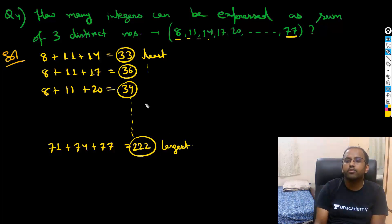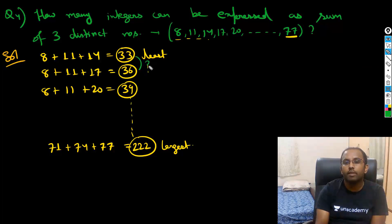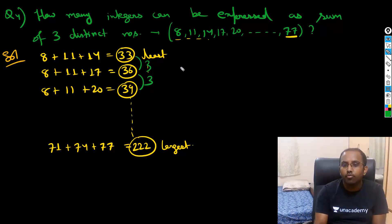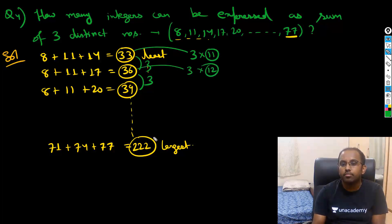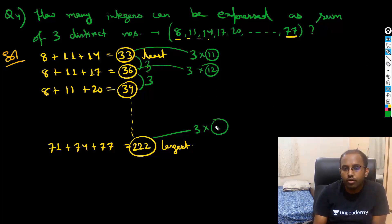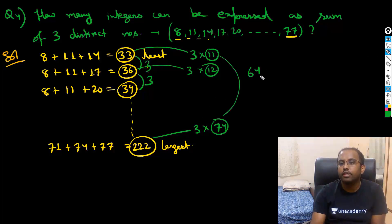From least to largest, we'll always have a gap of 3. So we can write these as 3k. The first term is 3 × 11, the next is 3 × 12, and the last term is 3 × 74. So starting from 3 × 11 and ending at 3 × 74, that means k runs from 11 to 74, giving us 64 values. That's the answer for this question.